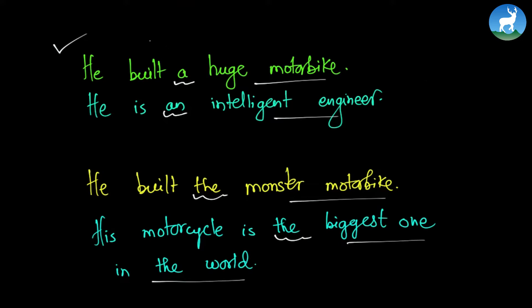Another idea: why are a and an used in the first two examples, and why is the used in the last two? When we say a huge motorbike, we are generally referring to any kind of motorbike — it does not mean a particular motorbike. Similarly, when we say he is an intelligent engineer, out of many intelligent engineers, he is one. We are talking about a single person out of many — any ordinary intelligent engineer, grammatically speaking.